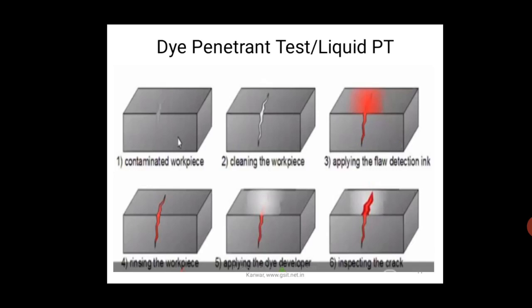This diagram shows the various steps involved in the DPT or dye penetrant test, also known as liquid penetrant test. Step one: the work piece is cleaned. Step two: you can see it is clean — there is a crack visible in the diagram but in the naked eye it is not visible. Then we apply the dye.